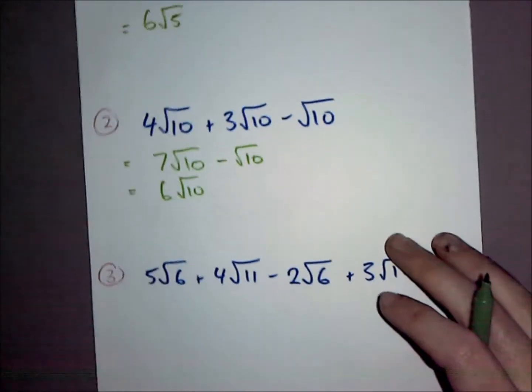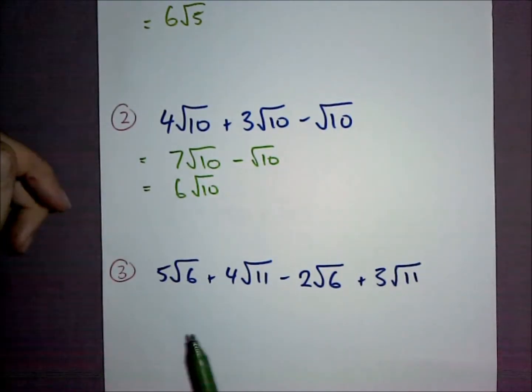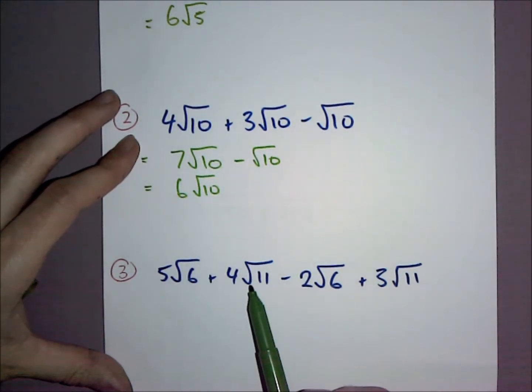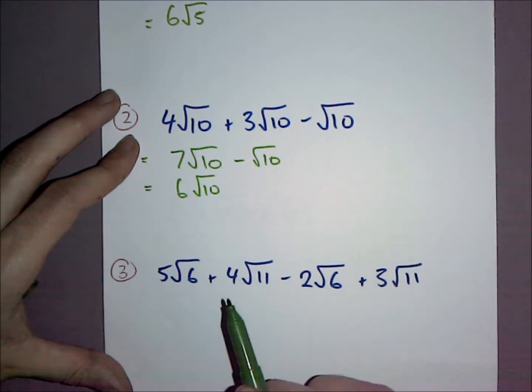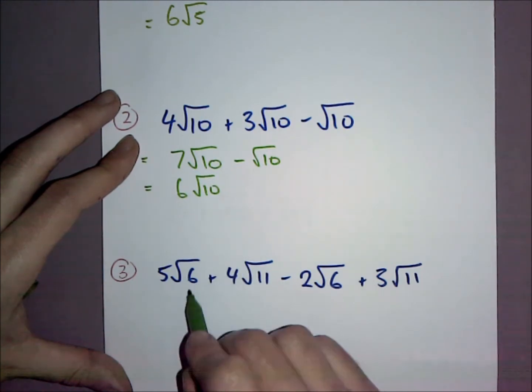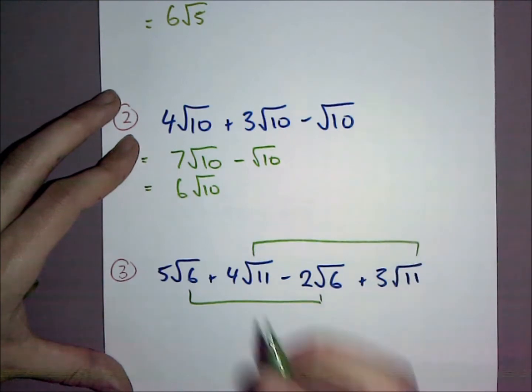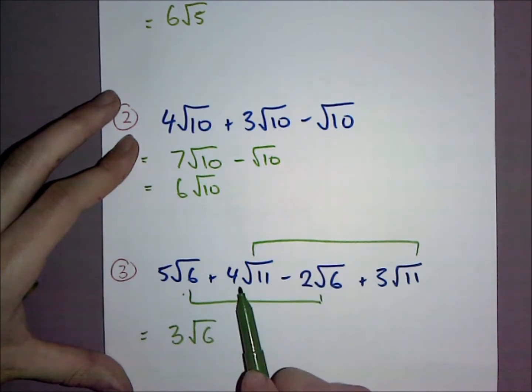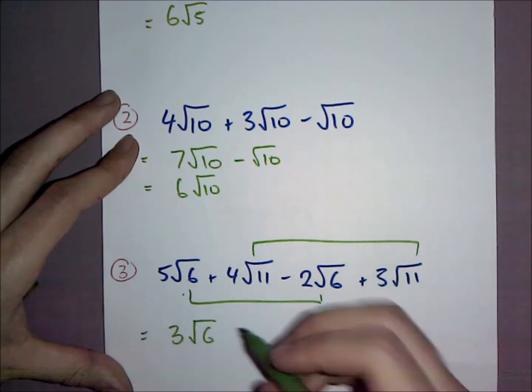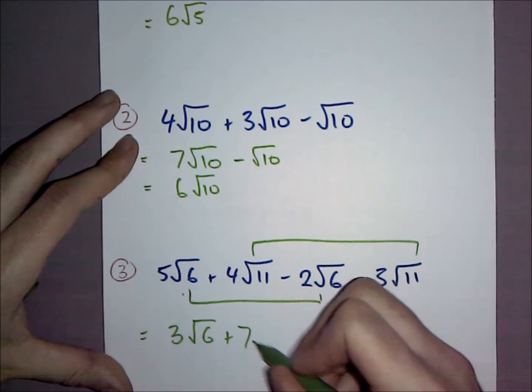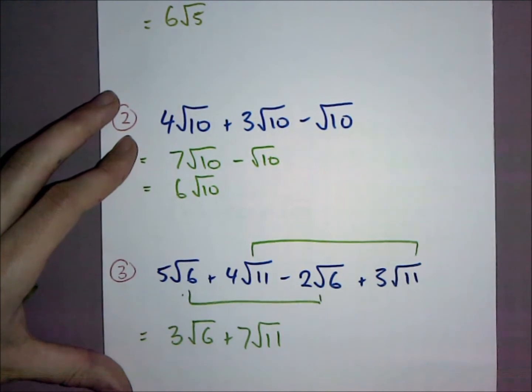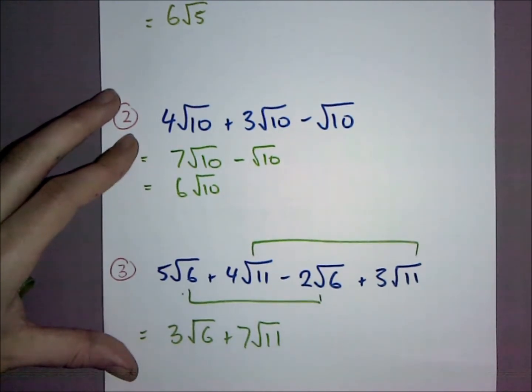Number 3. We've got a couple of different surds. Some are alike: these two are both √6 and these are both √11. So I'm going to join these together. 5√6 - 2√6 = 3√6, and 4√11 + 3√11 = 7√11. I can't join these because they're not alike, and I can't simplify either any further, so you're done.